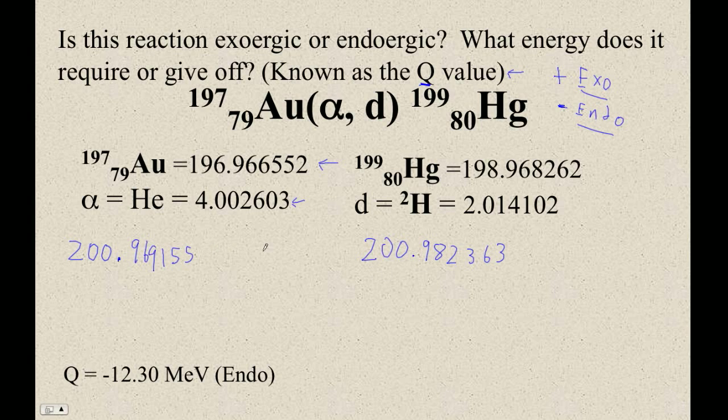This thing has gained mass. Therefore, it's gained energy. So it's going to be an endoergic reaction. Now to find the Q, you go left side minus the right side times 931.5.